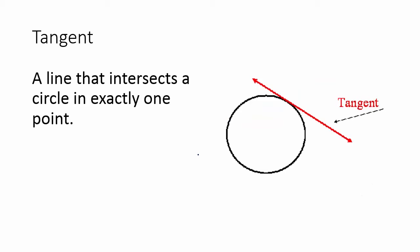Tangent: a line that intersects a circle in exactly one point. The difference between a secant and a tangent is a secant goes through the inside of the circle and intersects at two points, while a tangent is outside a circle and only intersects at one point on the circle.